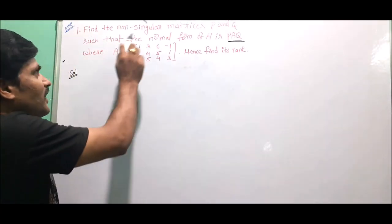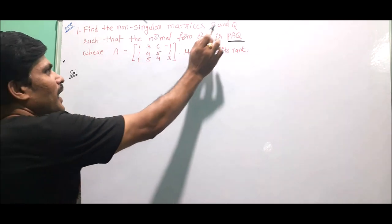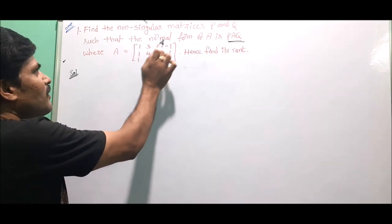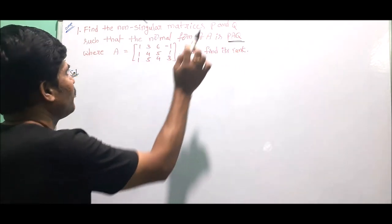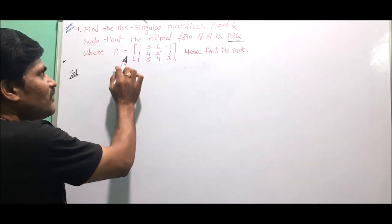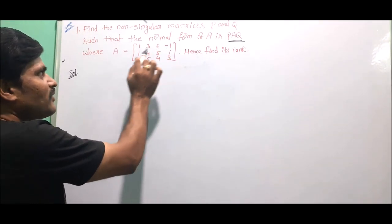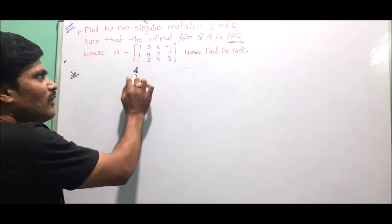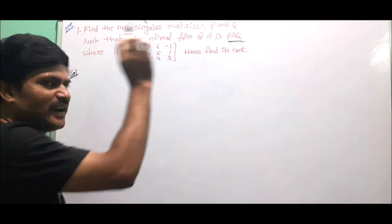The first problem is: find the non-singular matrices P and Q such that the normal form of A is PAQ, where A equals the matrix with rows [1, 3, 6, -1], [1, 4, 5, 1], [1, 5, 4, 3]. Hence find its rank.